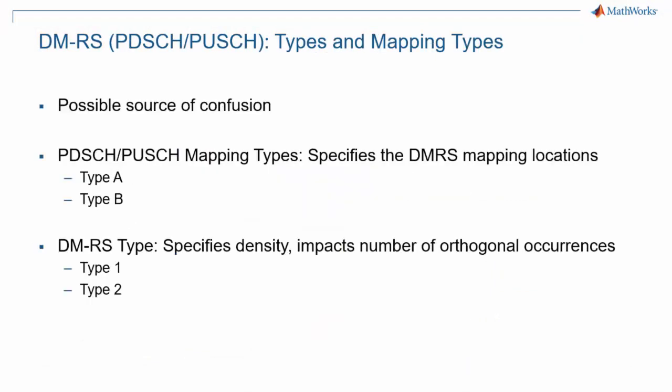As I introduce the last parameter for DMRS configuration — the DMRS type — I want to contrast it right away with the PDSCH or PUSCH mapping type. Those two types are completely unrelated. PDSCH or PUSCH mapping can be type A or B, implying whether the first DMRS symbol is at position 2 or 3 of the slot, or in the first symbol of the allocation, respectively. DMRS type 1 and type 2 are something completely different. This specifies the density of DMRS in the frequency domain and impacts the number of possible orthogonal sequences.